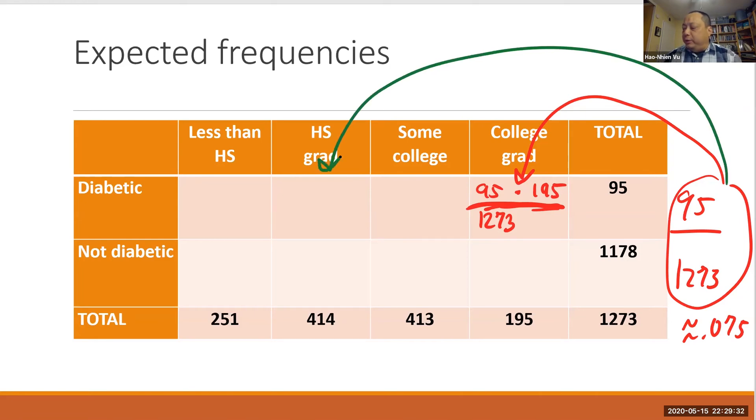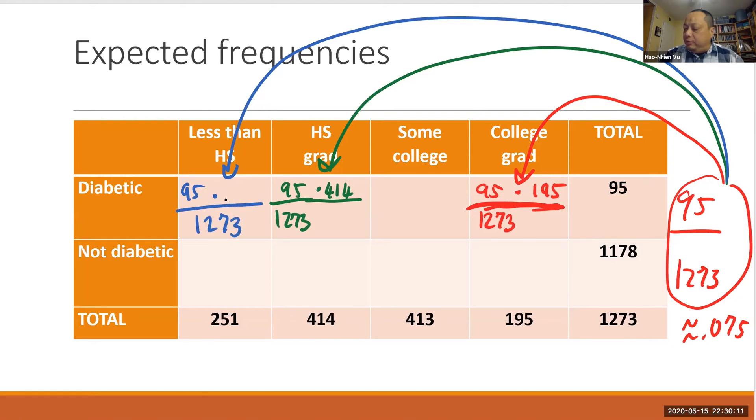And I can do the same thing for high school graduates. I will take 95 over 1273 and apply that to 414, meaning I multiply by 414. And the same thing with people with less than high school - 95 over 1273 times 251. And for that matter, I should be able to do this for the people who are not diabetic as well. The proportion of being not diabetic is 1178 divided by 1273. And I should be able to take this overall proportion of people not diabetic and apply it to each category. So for the first category, for example, the number of people who don't have diabetic should be 1178 over 1273 times 251. So the proportion times the total equals the number. And doing the same thing, I should be able to fill out the entire table.